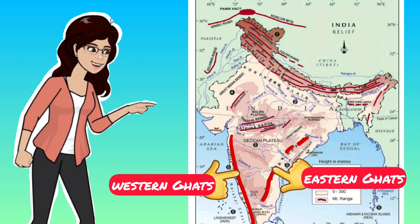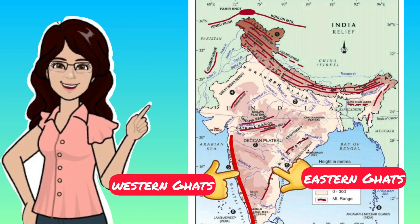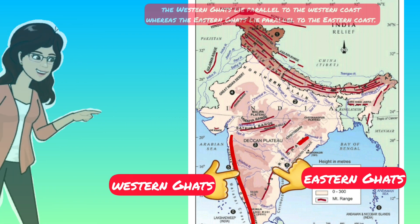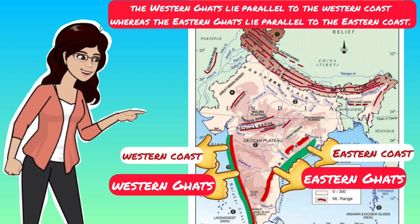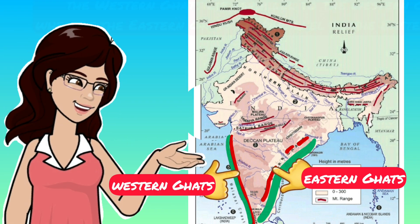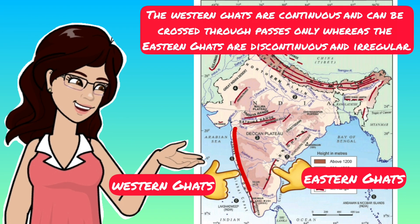There are many differences between these two Ghats. First, the Western Ghats lie parallel to the Western coast, whereas the Eastern Ghats lie parallel to the Eastern coast. Second, the Western Ghats are continuous and can be crossed through passes only, whereas the Eastern Ghats are discontinuous and irregular.